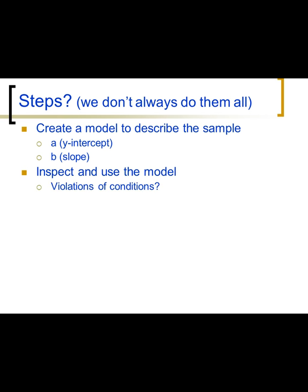Sometimes we inspect and use the model, and we consider whether we've violated conditions — just like ANOVA or t-tests. There are almost always conditions that need to be checked to see whether we can use the model at all. We're also interested in outliers: individual observations that are very different from the average, which can have a disproportionate influence on the math.